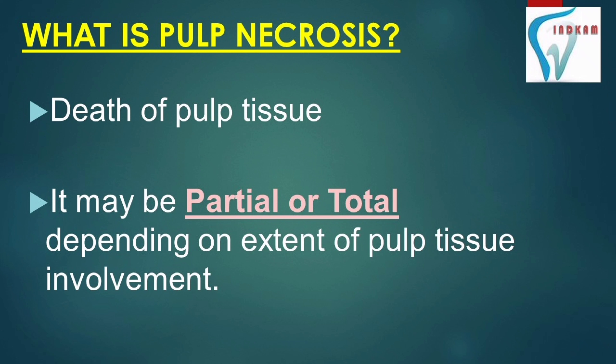Pulp Necrosis may be partial or total depending on the extent of the pulp tissue involved. If the whole pulp is necrosed then it is called complete or total Pulp Necrosis, and if only a portion of the pulp is involved then it is known as partial Pulp Necrosis.